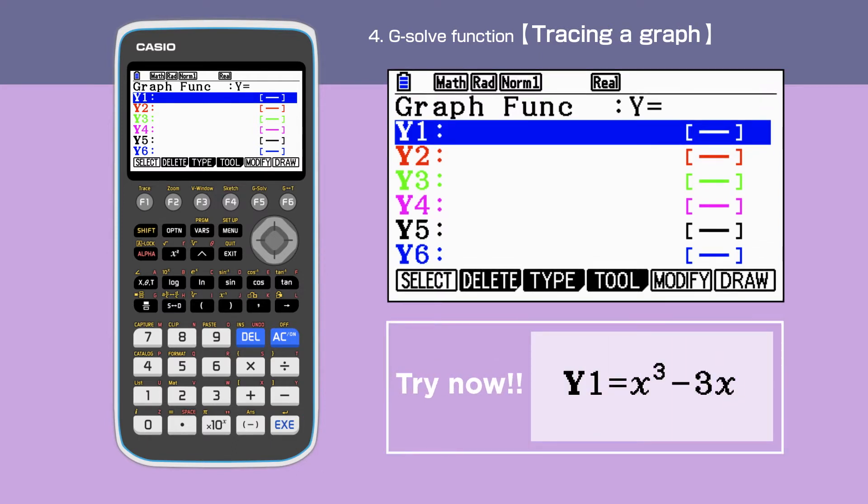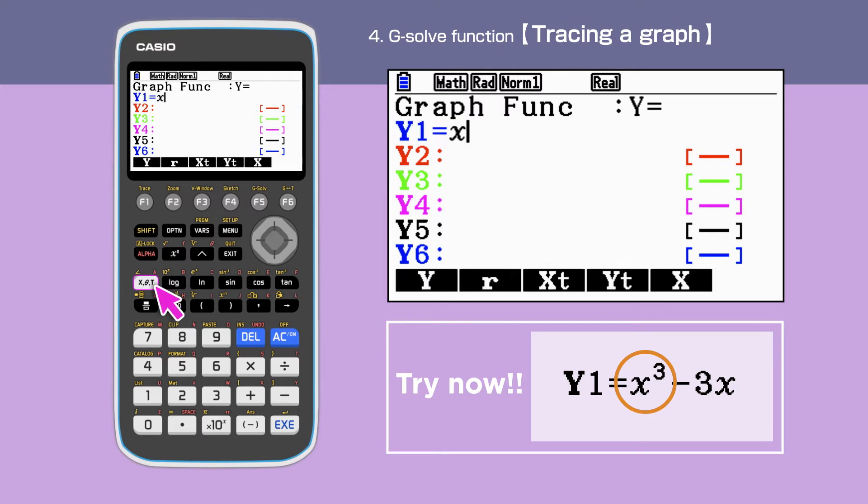Firstly, we are going to show how to trace a graph. Check that the graph function shows Y equals, then enter X cubed minus 3X in Y1. To get the power of 3, we will need to press the X theta T key, then the hat key.